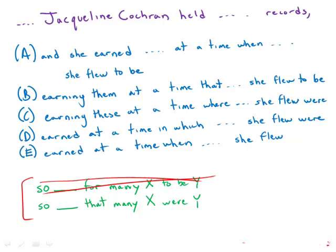And that's exactly what we have in answer choice A. The telltale sign is 'to be' — whenever you see 'to be' in sentence correction, a red flag should go up in your mind. That's not a good sign for an answer choice. So that eliminates A and B right away.